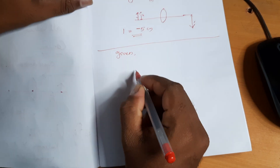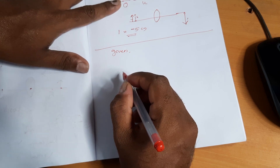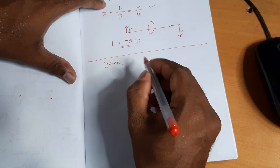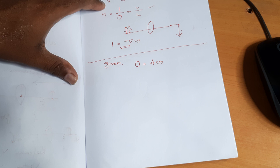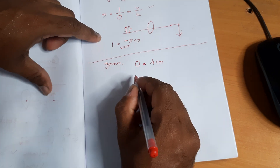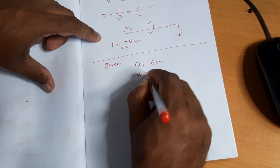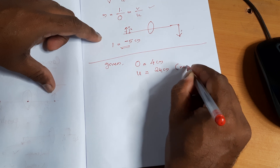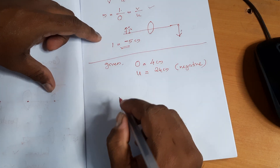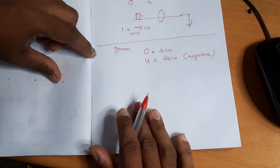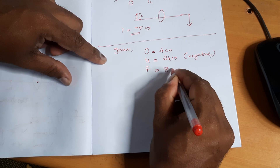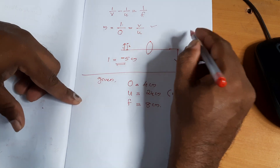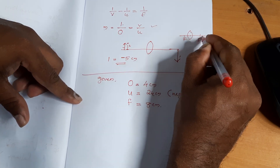Given: object height O is equal to 4 centimeters. It is placed at a distance of 24 centimeters, so the distance of object U is equal to minus 24 centimeters — the sign is negative because the object is in front of the lens. The focal length F is equal to plus 8 centimeters, positive because it is a convex lens.